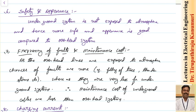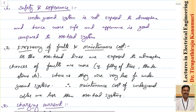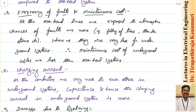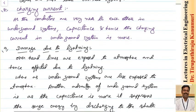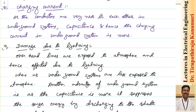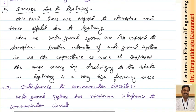Now the advantages of underground cables: safety and appearance are very good because they are not exposed to the atmosphere — no person will touch them and get a shock, and the appearance is neat. Regarding maintenance cost, overhead lines exposed to the atmosphere have more chances of faults like falling trees and thunderstorms, whereas these are very less in underground systems, so maintenance cost of underground cables is much less.